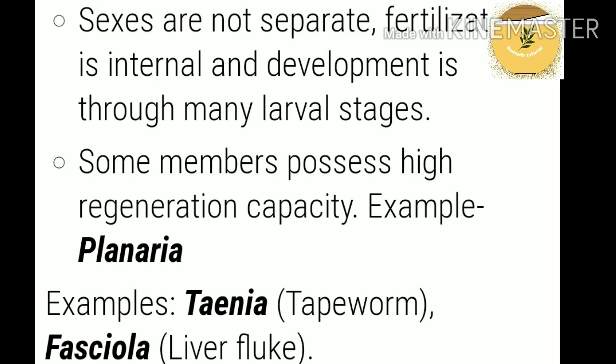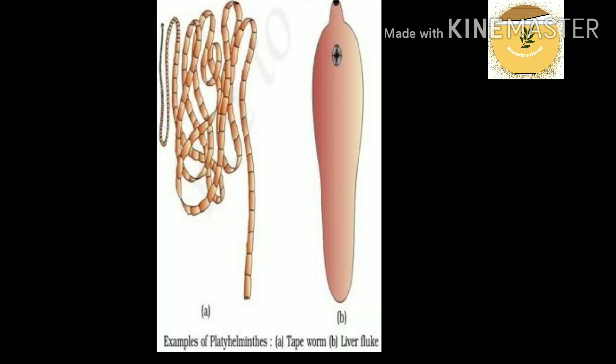Some members like Planaria possess high regeneration capacity. Examples of Platyhelminthes include Taenia (tapeworm), Fasciola (liver fluke). You can see tapeworm and liver fluke figures here — these are the liver fluke figures.